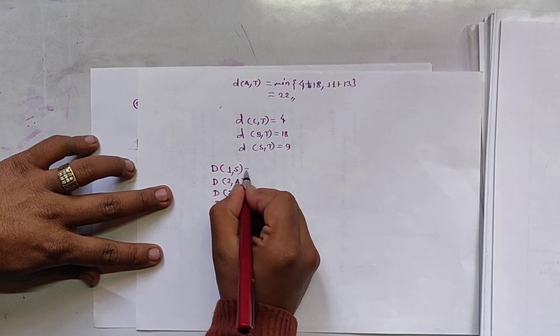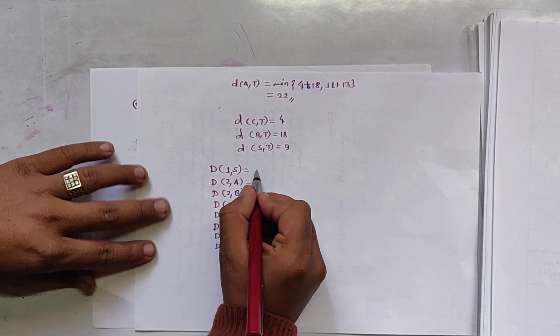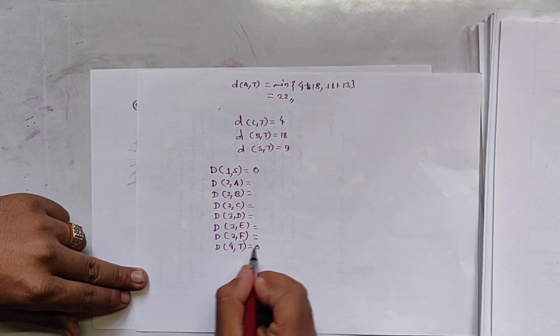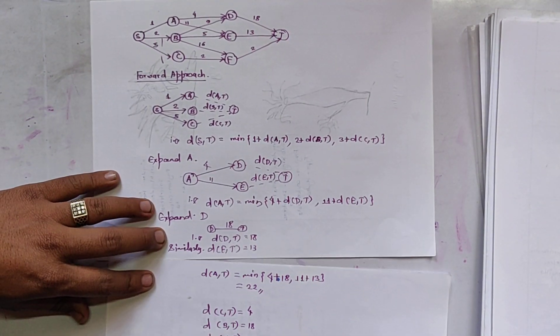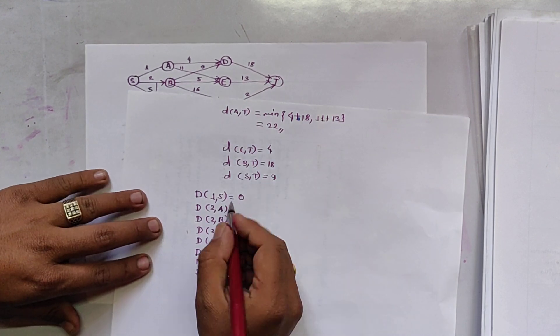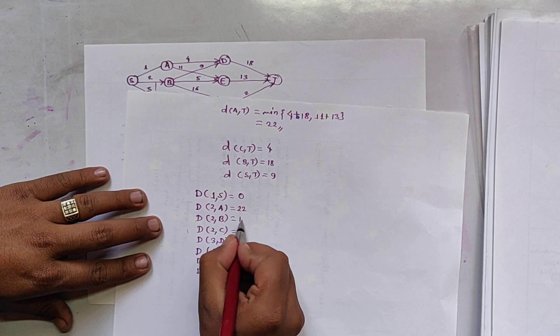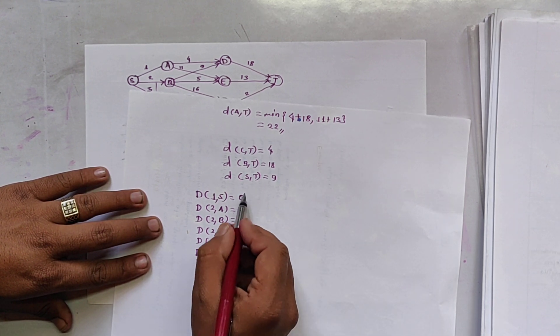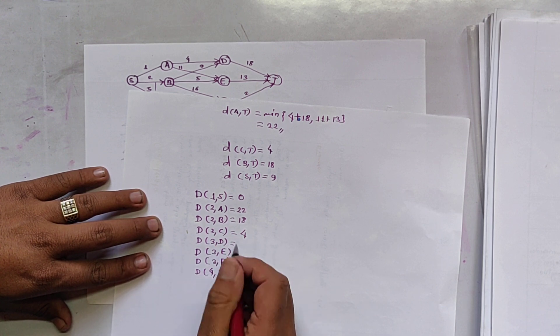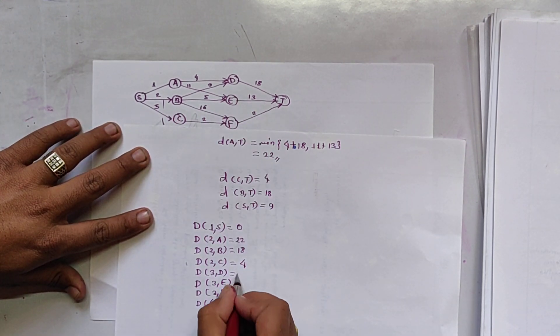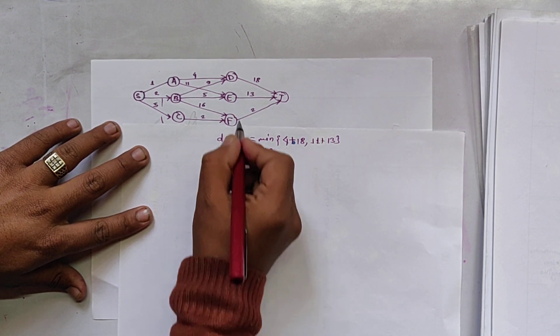And note that in dynamic programming, the initial stage and final stage are marked as 0. So D2A means, what is the value of DAT we have found? DAT is 22. D2B means DBT, it is 18. D2C means DCT, it is 4. And D3D means DDT, it is 18. DET is 13. DFT is 2.